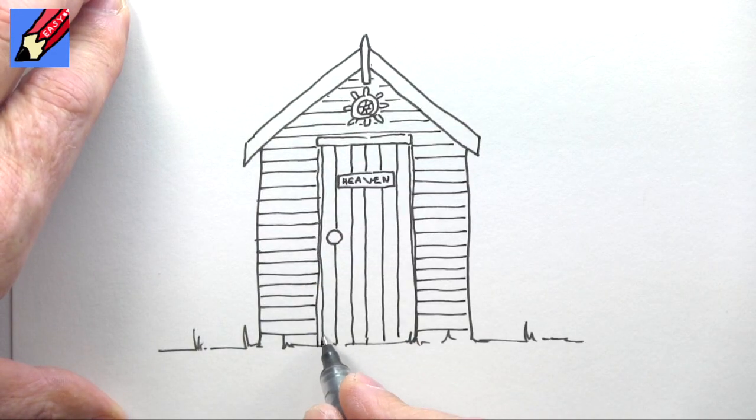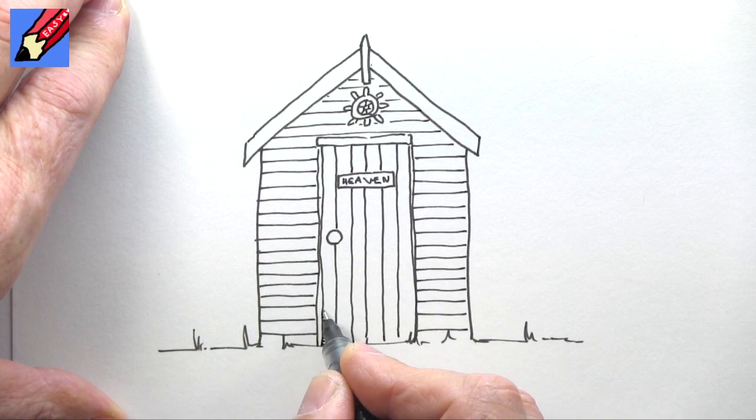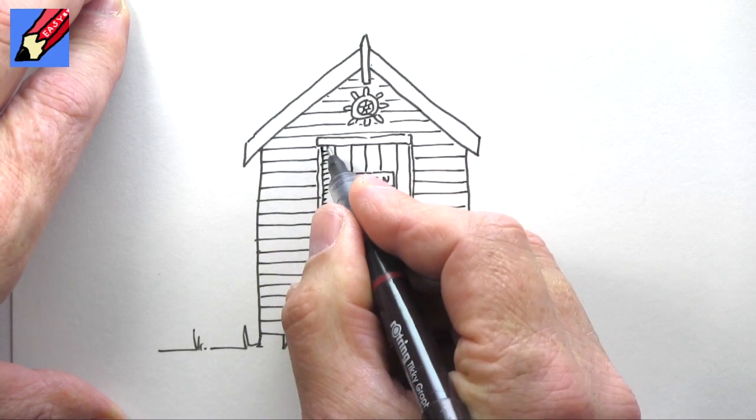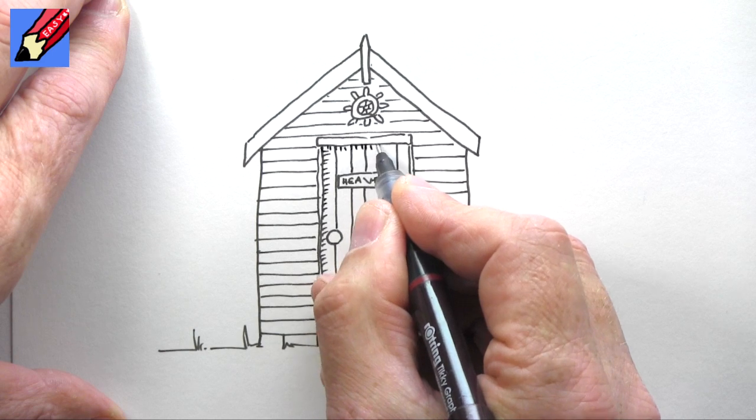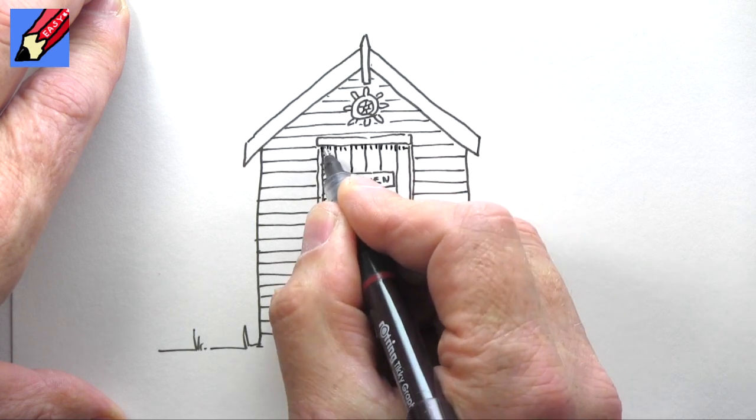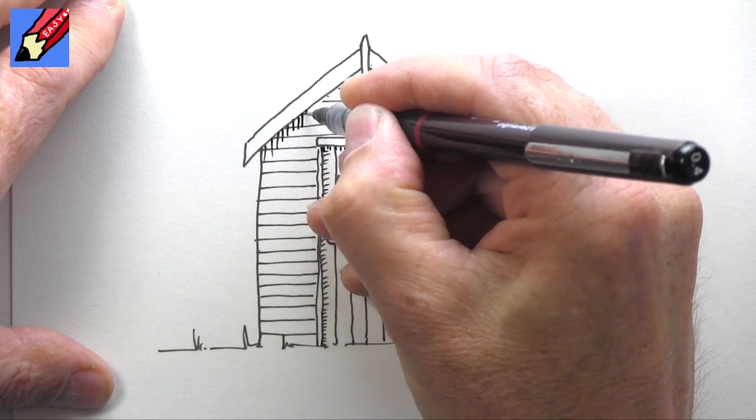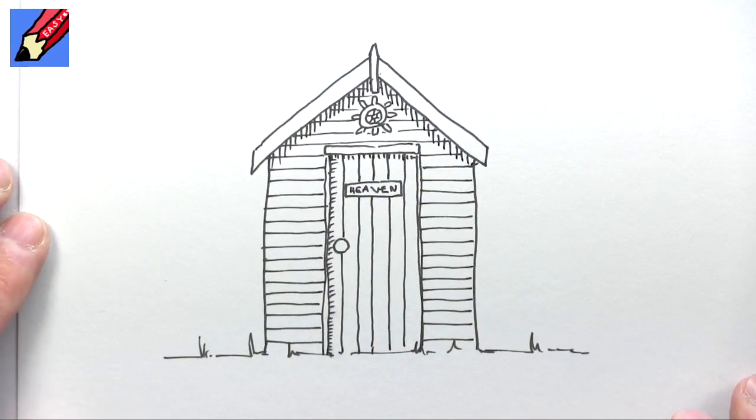Now I'm going to add just a little bit of shading in here, and a little bit down there as well to make the door step back a little bit. I'm going to put some shading under here as well. There you go, how to draw a beach hut real easy.